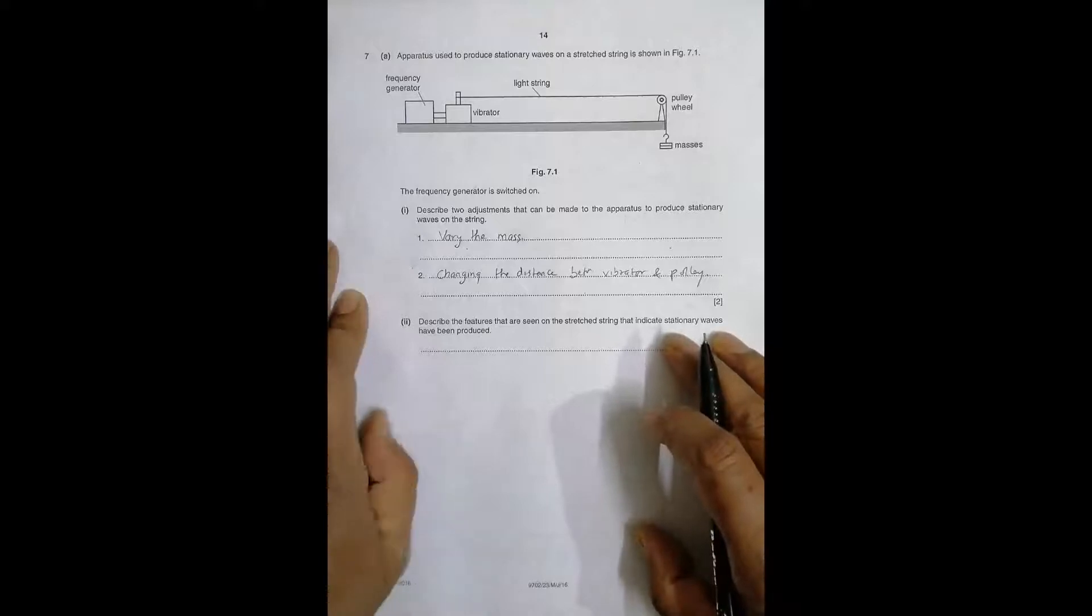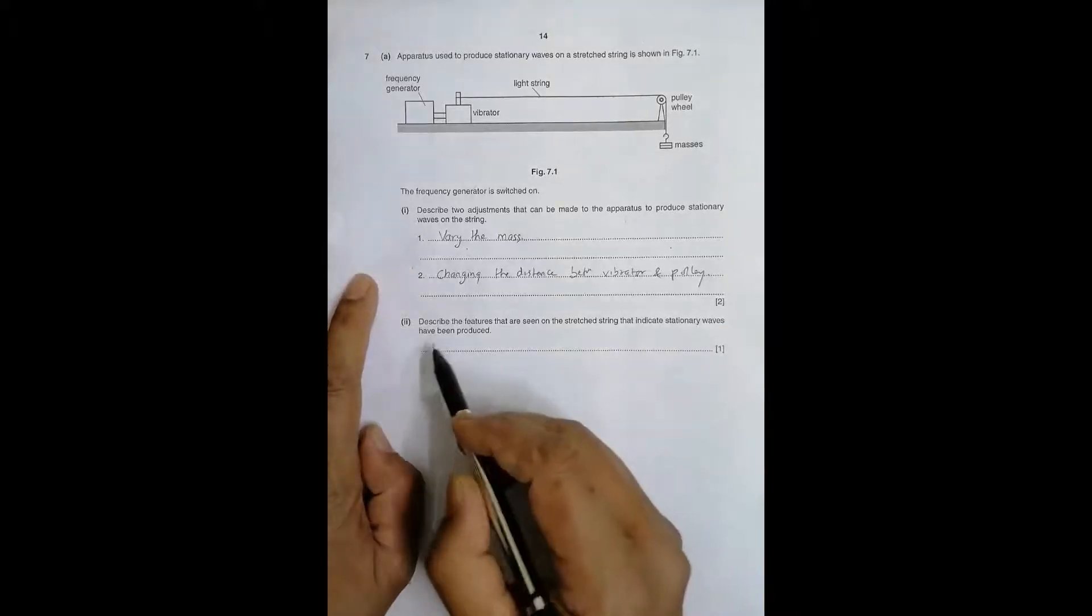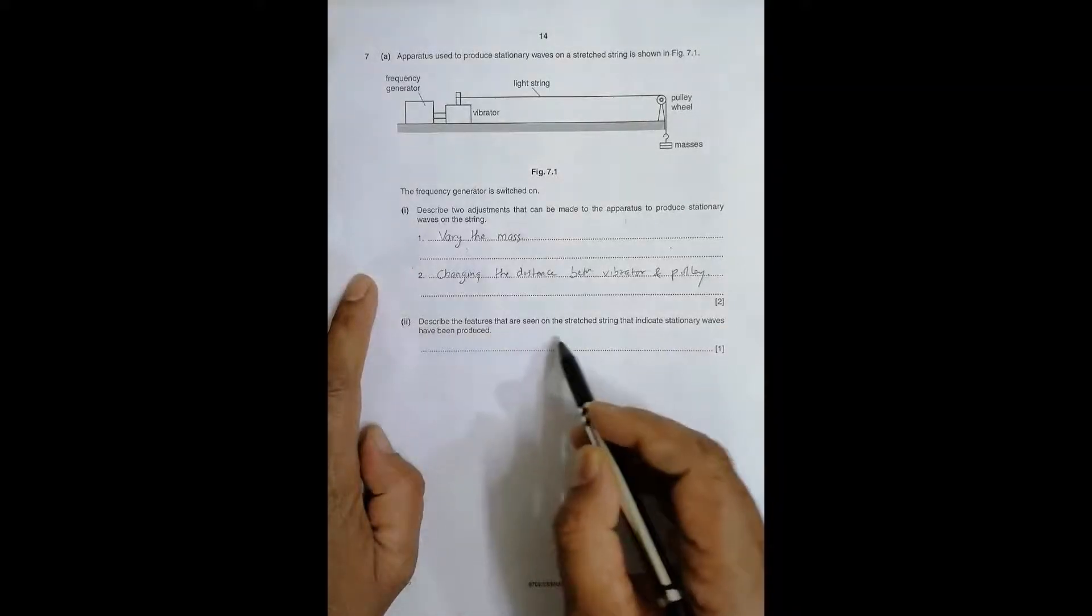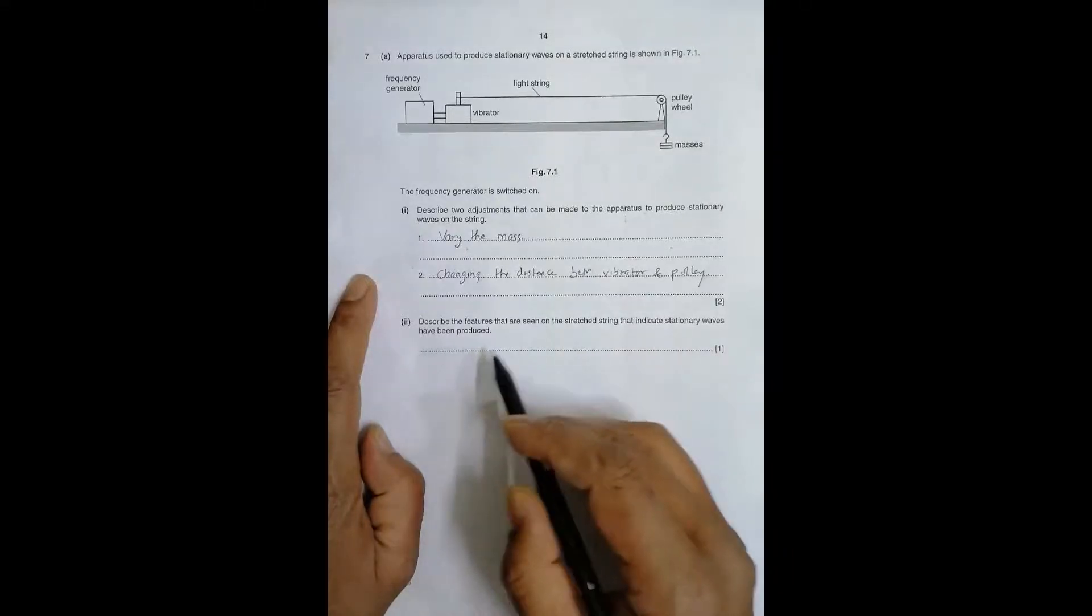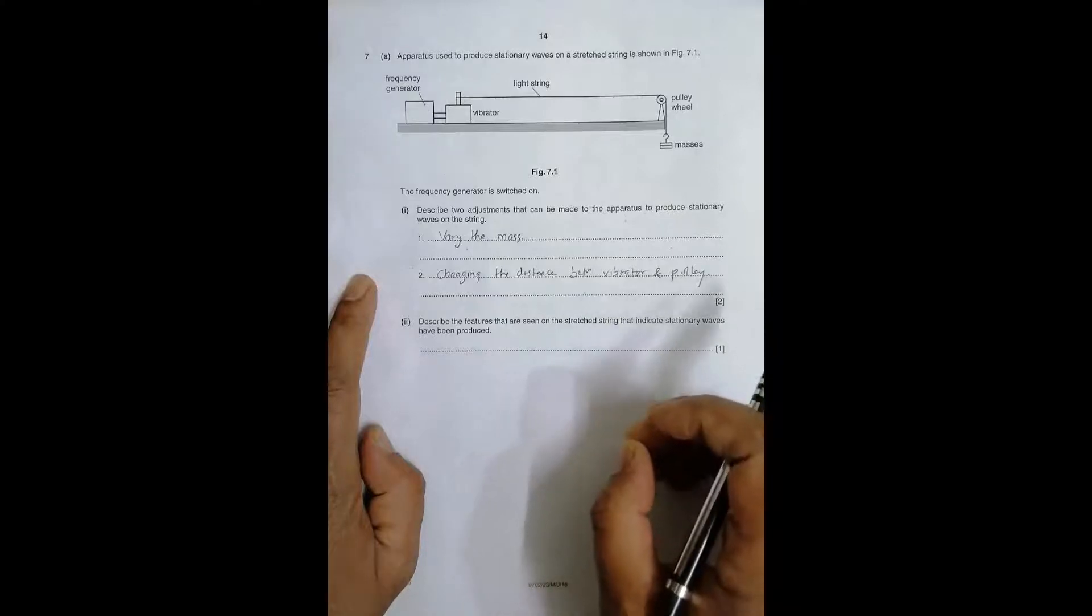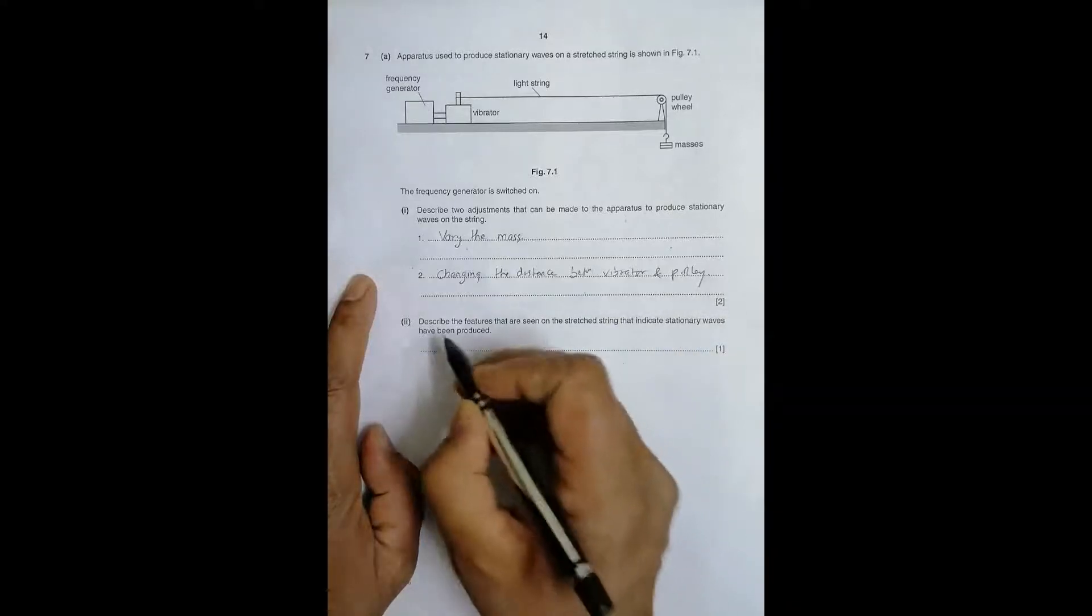Next, describe the features that are seen on the stretched string that indicate stationary waves have been formed. We have to say that property which indicates this, and that is the presence of nodes and antinodes.